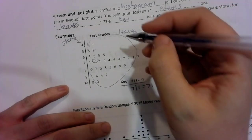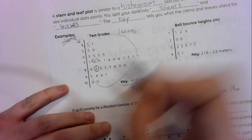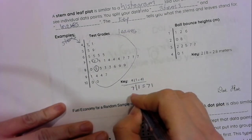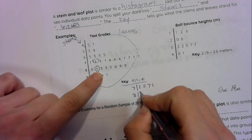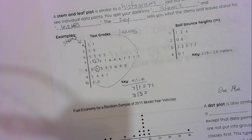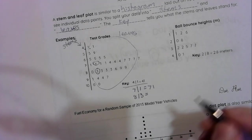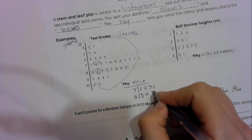How about this? What about this right here? The eight stem and the three leaf? Think about what that would represent. And hopefully you said that would represent 83.